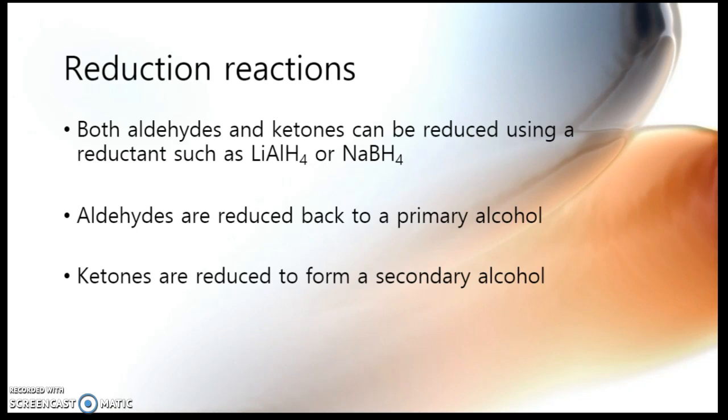These are very strong reducing agents because they have their hydrogen ion as a hydride, which is an H⁻ ion, so it really wants to be oxidised, so it will reduce just about anything. Now the aldehydes are reduced back to form the primary alcohol that they came from, while ketones are reduced to form the secondary alcohol that they came from.